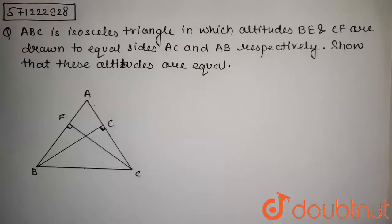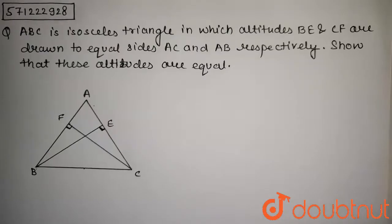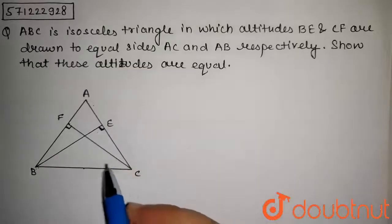The question is: ABC is isosceles triangle in which altitudes BE and CF are drawn to equal sides AC and AB respectively. Show that these altitudes are equal. So in this question we have to prove that BE is equal to CF.